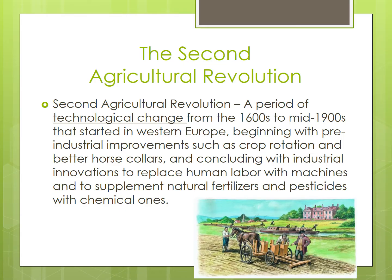The second agricultural revolution began in the 1600s and continued through about 1880. It initially began in Great Britain, the Netherlands, Denmark, and other neighboring countries, but quickly diffused throughout Europe and some of its colonies.